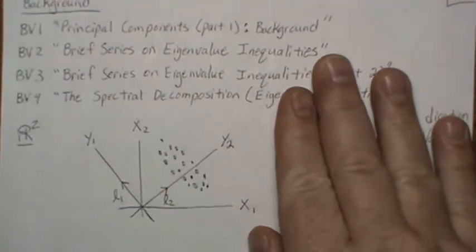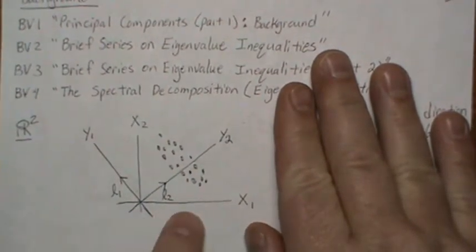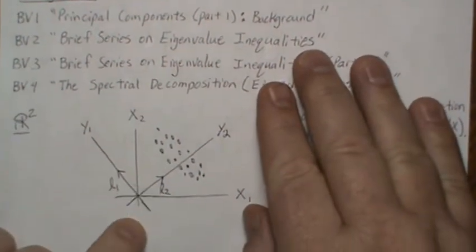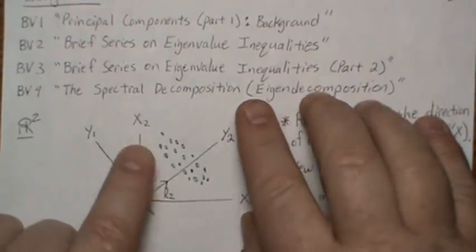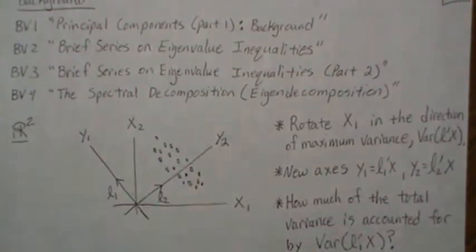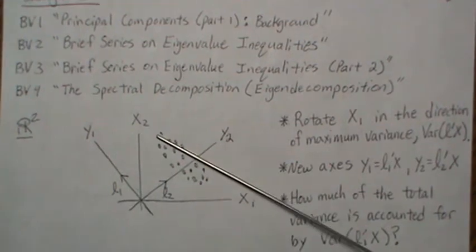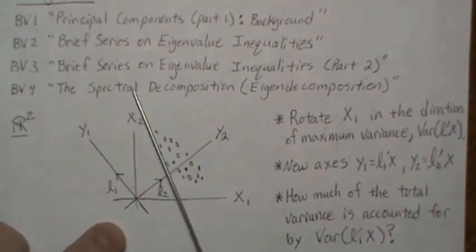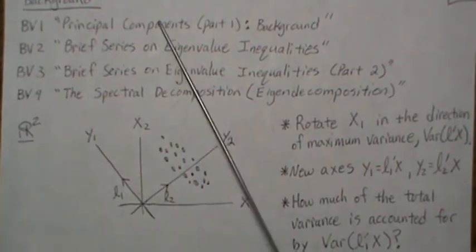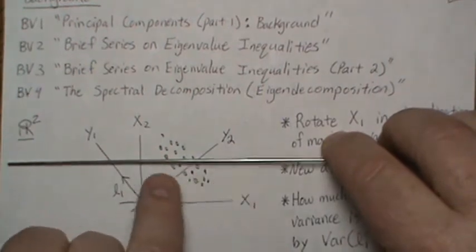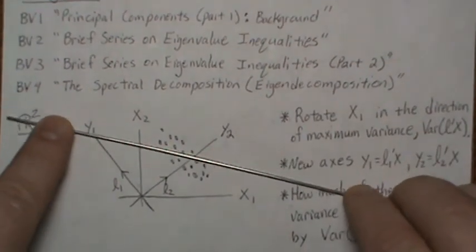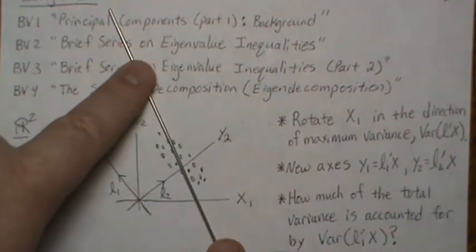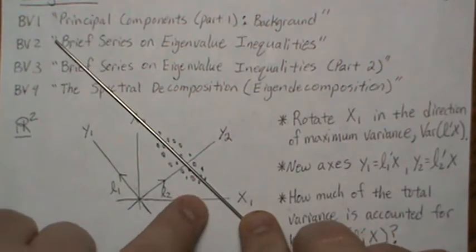So here's the situation. We have data with axes X1 and X2. According to X1, there's some variance associated with this data, and in the X2 direction there's a variance associated with it as well. X2 goes this way, X1 goes this way. But what if we rotated the axis and looked at the variance there — and there, and there? At some point, there's a direction where the variance is maximized.